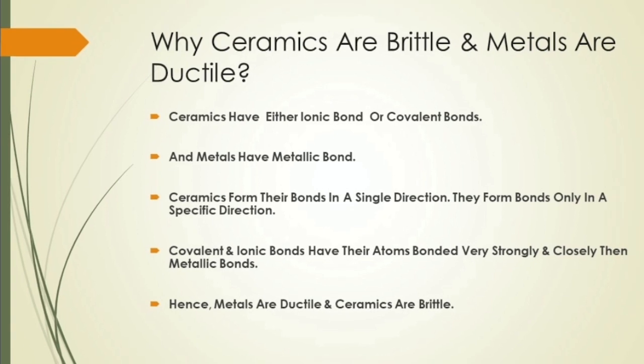Jaise ki aluminium oxide Al2O3 — yeh ek compound hai jo ki aluminium atoms aur oxygen atoms se bana hua hai. Most ceramics jo hote hain woh do ya do se zyada elements se bane hote hain, jise hum compound kehte hain.